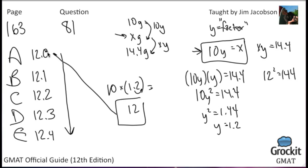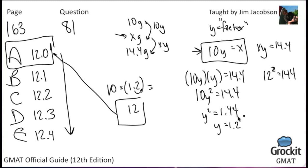If you didn't know that 144 is 12 squared, you could factor out perfect squares like 9 and 4, gradually reducing until you reach 1.2. But it's much easier to simply know that 12 squared equals 144. That's it for question 81.